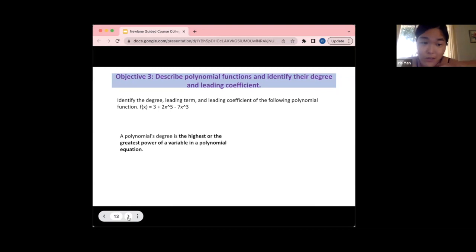I actually googled this—I know what it is, but what's the nice way to write it? A polynomial degree is the highest or the greatest power of the variable in the polynomial equation.